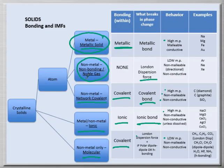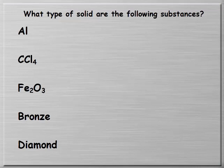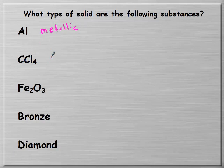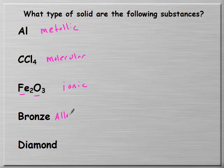Identifying solid types: a pure metal is metallic. A compound starting with a nonmetal is molecular. A metal combined with a nonmetal is ionic. Bronze is a type of alloy—alloys are metallic because it's a mixture of metals. Diamond is a network covalent solid.